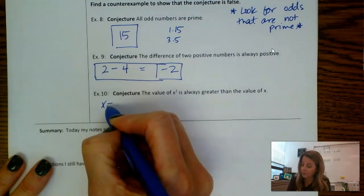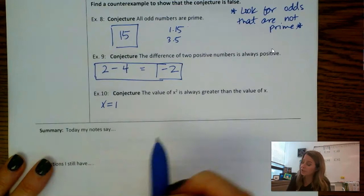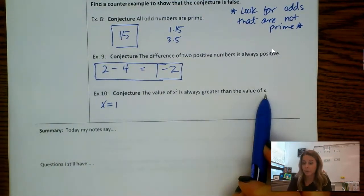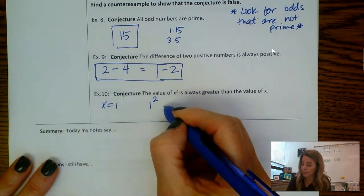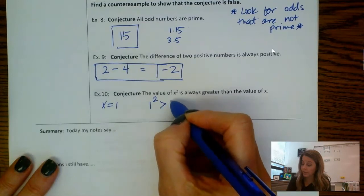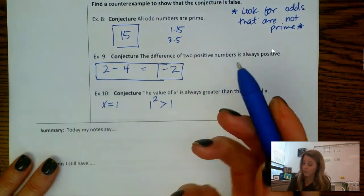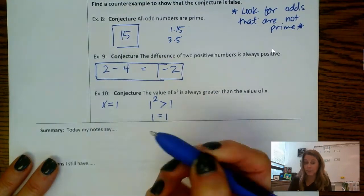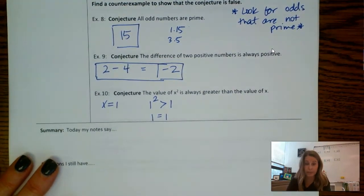Let's say if x equals 1. So the conjecture says if I take 1 and I square it, it's greater than the original number of 1. So if I take 1 and I square it, the conjecture said that it's greater than 1 because I'm saying x is 1. Well, when I square 1, it's not greater than 1, it's equal. So actually, I just found a counterexample right here.